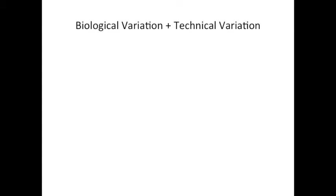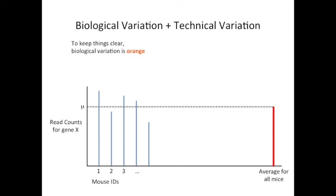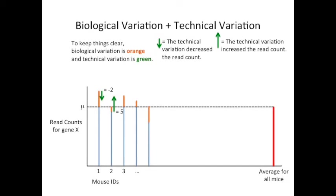Now let's consider what happens if we have both biological variation and technical variation. To keep things clear, we're going to label the biological variation with an orange color. Here we have orange lines indicating the difference between the read counts and the average. We're also going to label the technical variation with a green color. For the first mouse, the technical variation reduced the read count by two, so we're going to give it a green arrow pointing down. The second mouse had technical variation that increased the read count, so we use an arrow pointing up. And here we see the effects of technical variation on all five mice that we sampled.